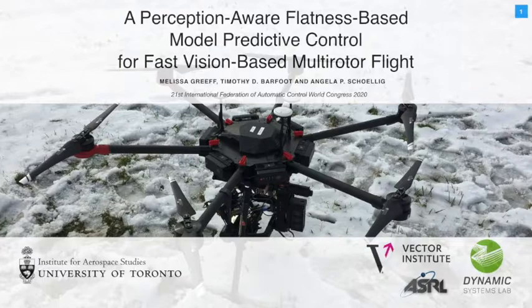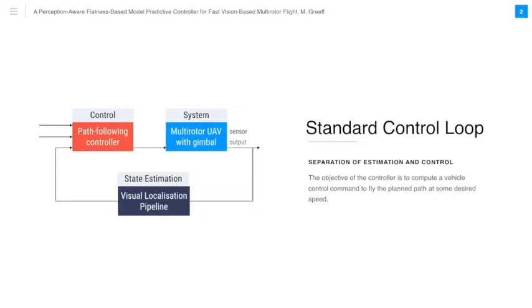To start, it is useful to take a step back and look at the standard control loop. In the standard control loop, there is a separation of estimation and control. The objective of the controller is to compute a vehicle control command to fly some planned path with some desired speed based on the provided state.